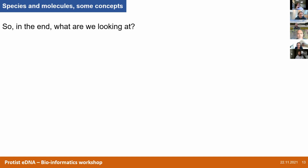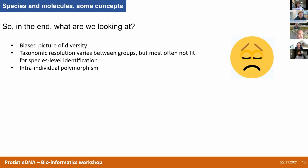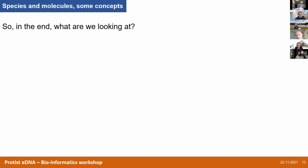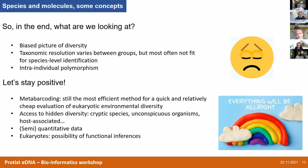So in the end, we might ask: what are we looking at? The picture of diversity is completely biased. We also have taxonomic resolution that varies between groups, and most often with most eukaryotes it doesn't really fit with species-level identification. But let's stay positive — in any way that you're looking at environmental phenomena, you will look through biased glasses. If you're trying to count cells or culture them, you will anyway fall into big biases.